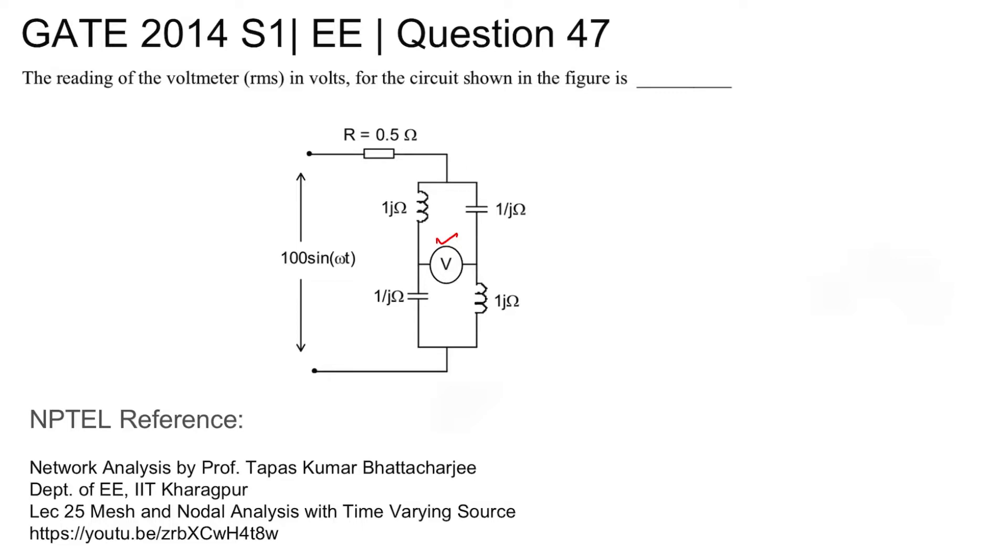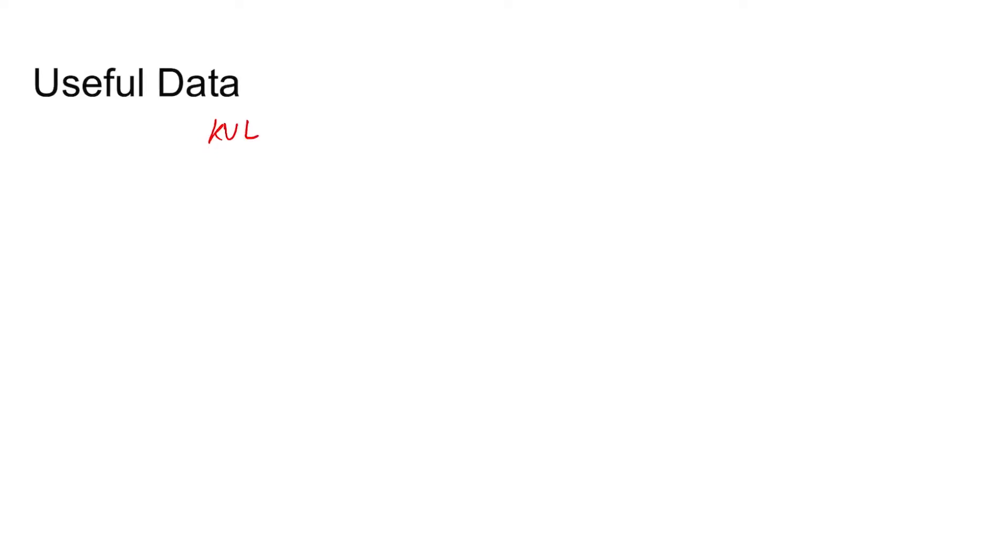Useful data: You need to have normal knowledge of KVL, that is Kirchhoff's Voltage Law, which tells the sum of voltage drop or gain across all elements in a circuit, that sum is equal to zero.